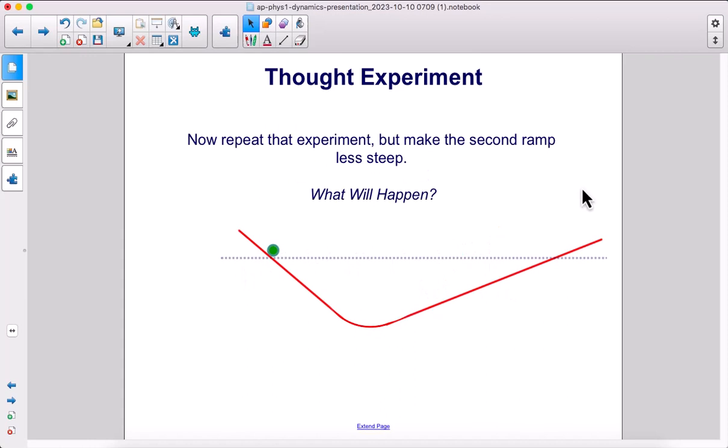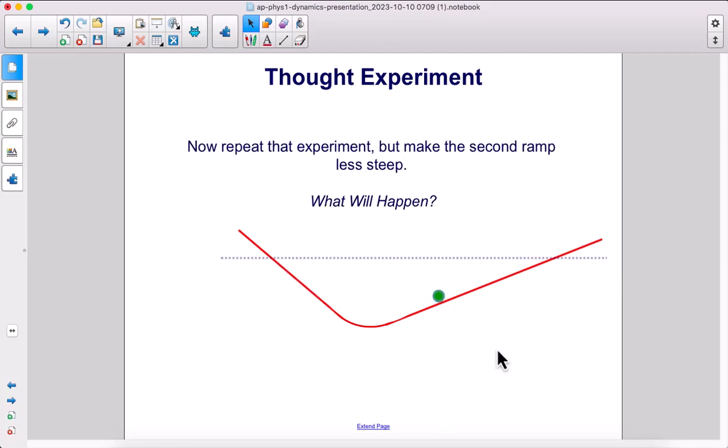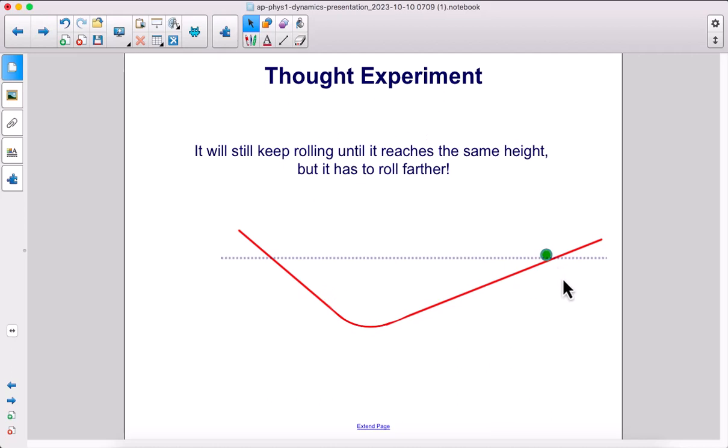Now, repeat that experiment, but make the second ramp less steep. What will happen? So it's going down the ramp to the bottom and then back up. It will still keep rolling until it reaches the same initial height, but this time it does have to roll farther.